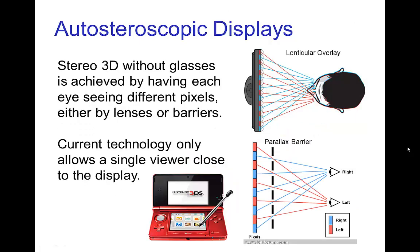The best option would be to not wear any glasses at all — those systems are called autostereoscopic displays. There are two basic types: lenticular overlay, which uses a set of lenses where consecutive pixels have different lenses projecting the image to either the left or right eye, and parallax barrier, which uses a set of slits so the right eye sees one set of pixels and the left eye sees another. The parallax barrier is how the Nintendo 3DS works.